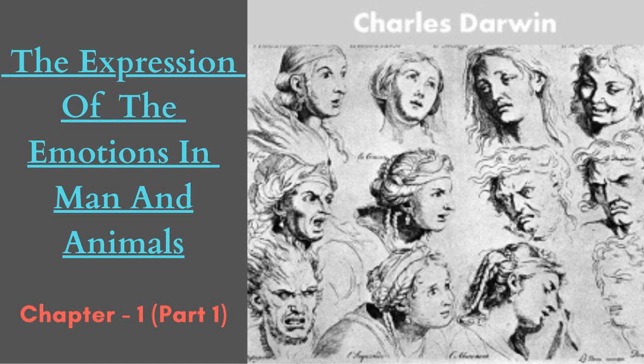In the fourth and fifth chapters I will describe the special expressions of some of the lower animals, and in the succeeding chapters those of man. Everyone will thus be able to judge for himself how far my three principles throw light on the theory of the subject. It appears to me that so many expressions are thus explained in a fairly satisfactory manner that probably all will hereafter be found to come under the same or closely analogous heads.